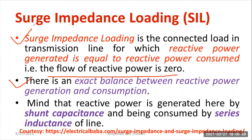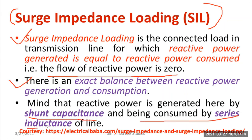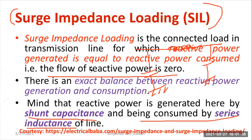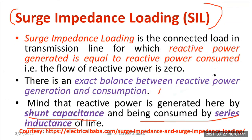This exact balance between reactive power generated by the capacitor and reactive power consumed by the inductor is what happens in this special condition called surge impedance loading. The reactive power is generated by the shunt capacitors and consumed by the series inductors of the line. In a transmission line there is always shunt capacitance in parallel and series inductance — both have to be considered.